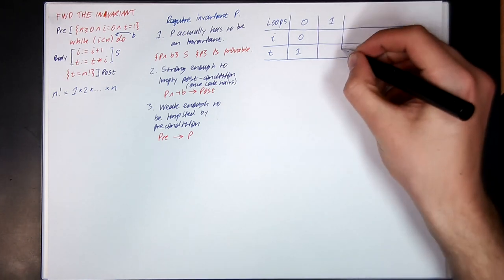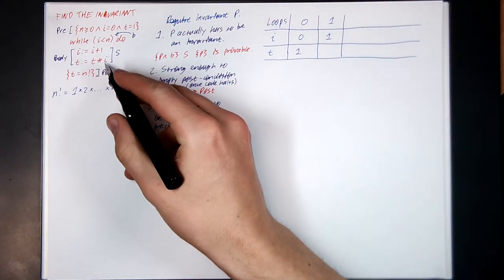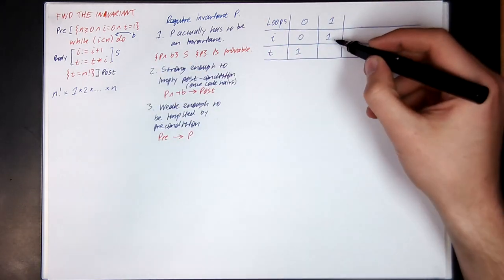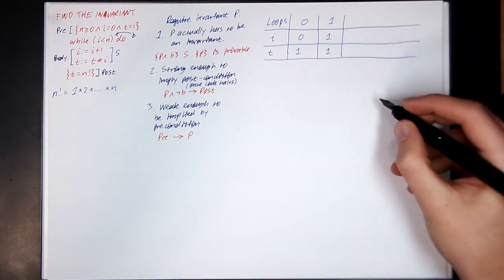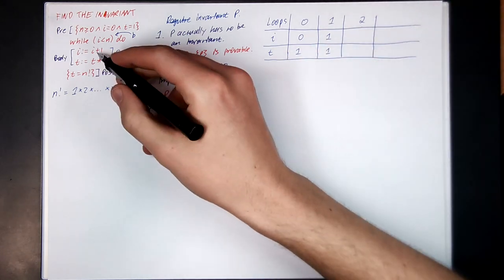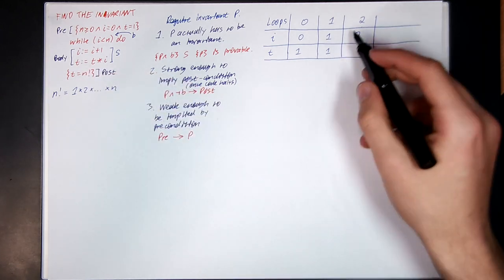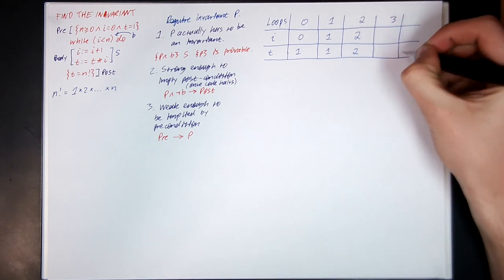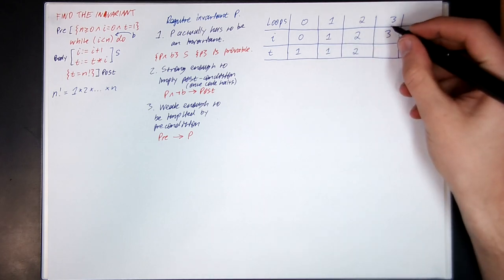On the first loop, the code is going to increase i by 1 and then multiply the current value of t by the current value of i. So i is now 1, and 1 times 1 is 1. In the second loop iteration, i increases by 1 so i is now 2, and t becomes 1 times 2, which is 2. In the third loop iteration, i is increased by 1 and t becomes 2 times 3, which is 6.